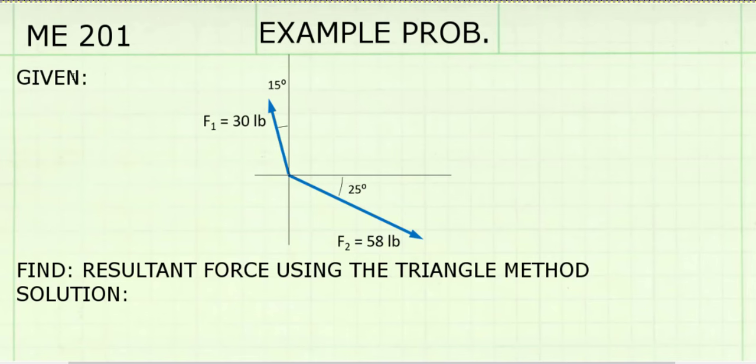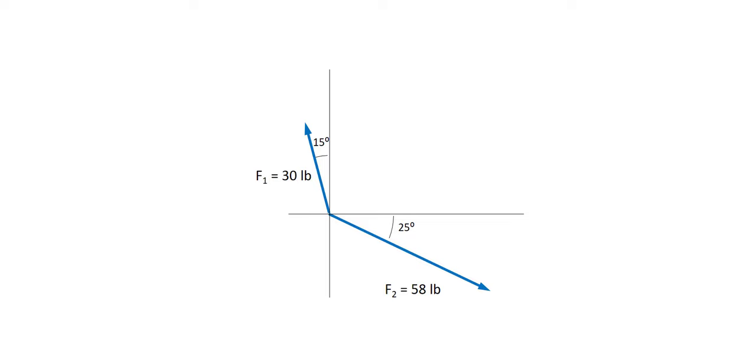I've set up my engineering paper with given and find information. Now I need to think about how to solve this problem. With the triangle method, we will rearrange our two vectors so that they are touching tip to tail. I'm going to move vector F2 so its tail is touching the tip of vector F1, and now I can draw the resultant vector from the tail of vector 1 to the tip of vector 2.